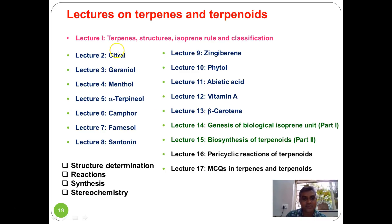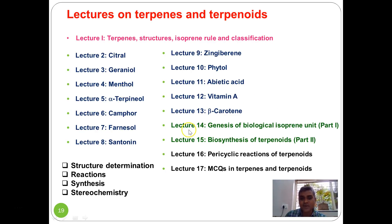The upcoming lecture series will cover dozens of molecules including citral, geraniol, menthol, alpha-terpineol, camphor, phytol, abietic acid, vitamin A, and beta-carotene. Menthol in particular has very rich stereochemical aspects. The genesis of the biological isoprene unit — the biosynthesis of terpenoids, involving carbocation chemistry — will be covered across two lectures. A lecture on pericyclic reactions of terpenoids and a final multiple-choice question revision lecture will also be included.